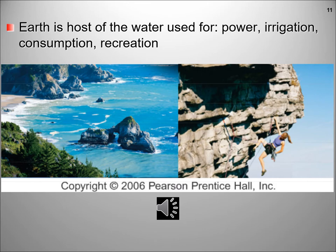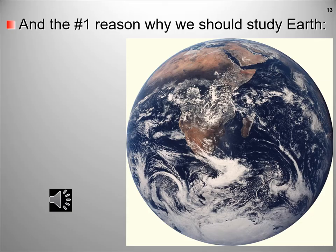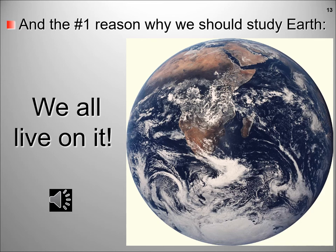All the water in our solar system is either derived from the processes that formed our planet or from processes that formed the solar system. We need water for consumption, for energy, to grow our food, and for recreation. Humans enjoy the Earth so much that they want to be a part of the landscape — swimming, floating, caving, camping, or like this woman hanging from a rock outcrop. Landforms are derived from differing Earth processes, from the collision of continents to form mountains to great valleys carved by stream erosion, or deserts formed from wind erosion. Unique ecosystems have developed on these varying landscapes. Landscapes certainly have aesthetic value to humans — painting and sculpting, and our largest monuments are carved from its mountains. And the number one reason why we should study Earth? We all live on it!